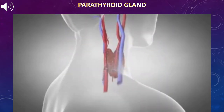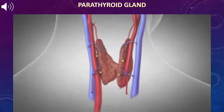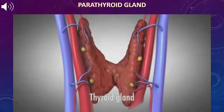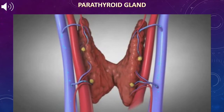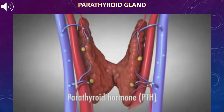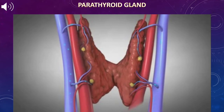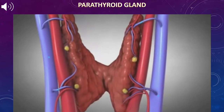There are 4 parathyroid glands located behind the thyroid gland. Parathyroid glands monitor and control the amount of calcium in our blood and bones by secreting a hormone called parathyroid hormone, or PTH. These glands monitor blood calcium and respond by making more or less PTH hormone.